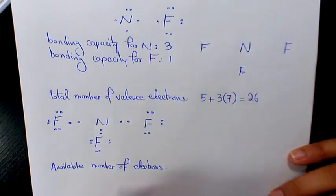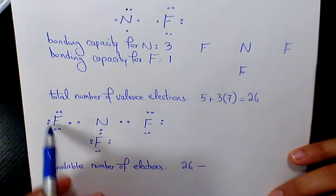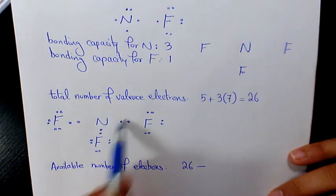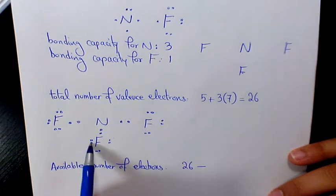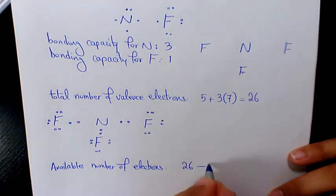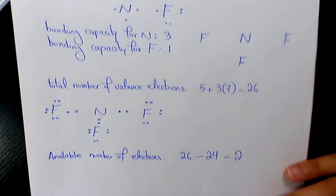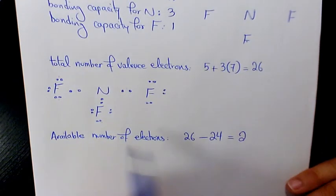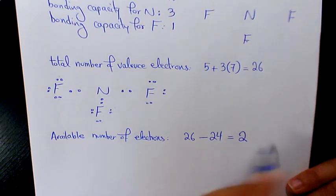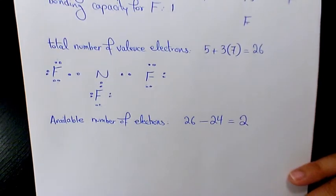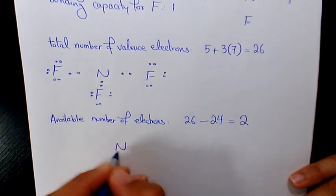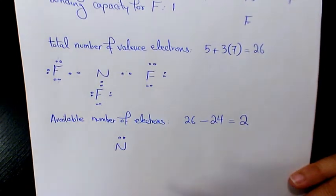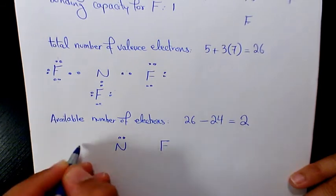So we have 26 minus 24 — that's the electrons already placed on the surrounding atoms — so we still have two more electrons to use. In this case we need to place the remaining electrons on the central atom in pairs, so the lone pair goes here on nitrogen.